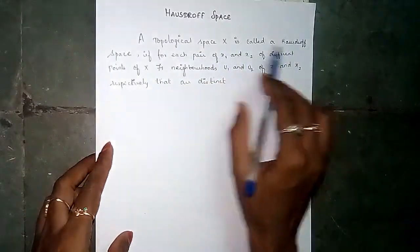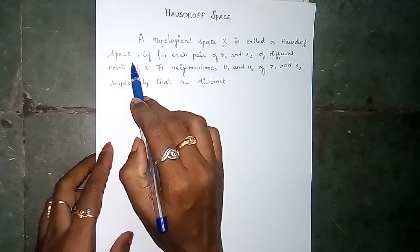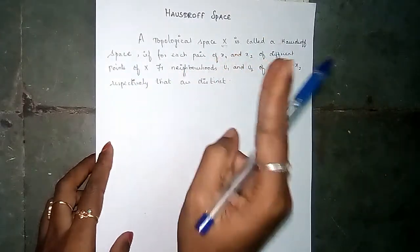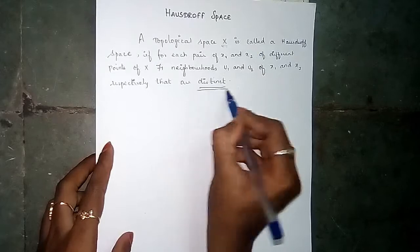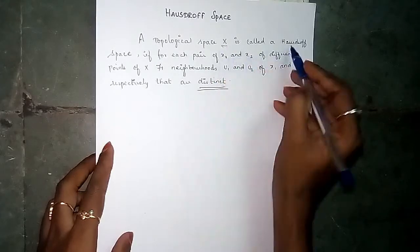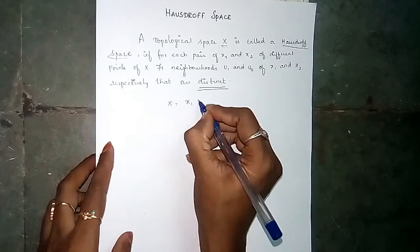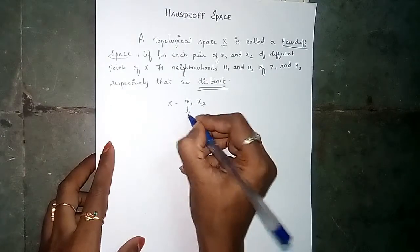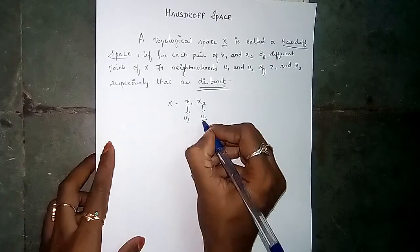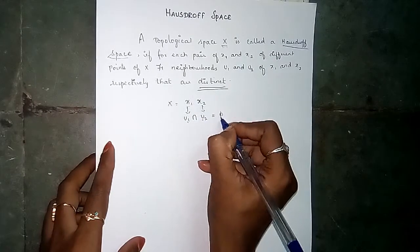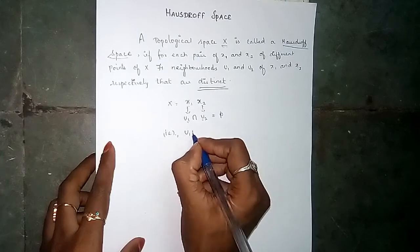A topological space is called Hausdorff space if you have a space X, the X is the topological space. If you have Hausdorff space, the two neighborhoods exist. The two neighborhoods are distinct. The intersection is empty.